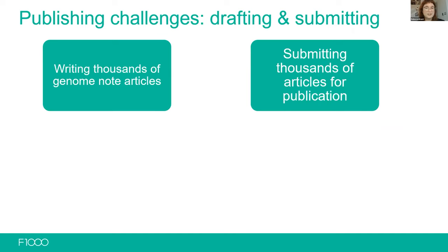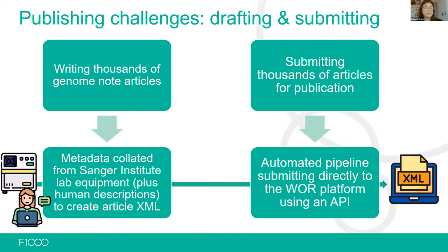Once you have your articles written, how do you submit thousands of articles for publication on a platform like Wellcome Open Research? We've addressed these challenges in a couple of ways. First, in terms of drafting the genome articles, we're working with metadata collated directly from the Sanger Institute's lab equipment — getting information about the genome sequences directly from the lab, adding it to a human-written description of the species, and using this to create article XML. Then, thinking about submitting these articles, we've developed an automated pipeline using an API that allows the Sanger Institute to submit directly to Wellcome Open Research.